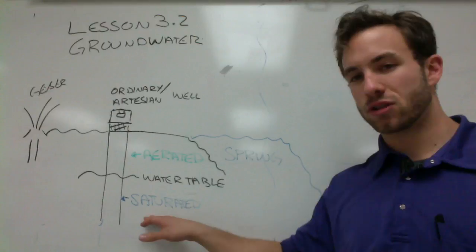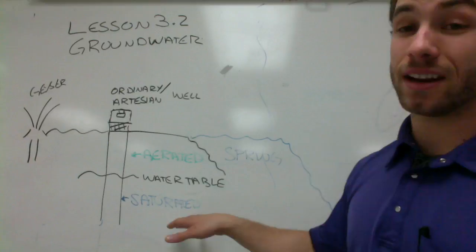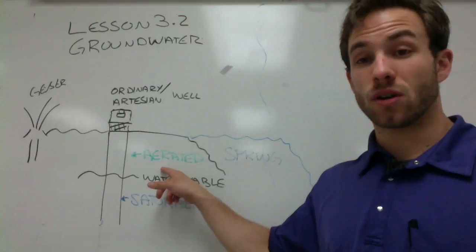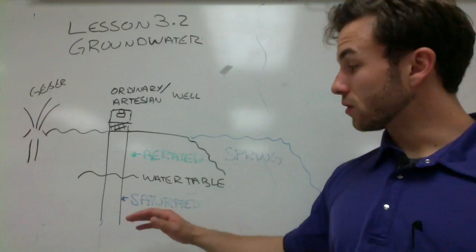The place where that water is stored is what we call the zone of saturation — saturated because there's water filling that space. That zone of saturation is divided by a water table, which is the line where we separate where there is water and where there's not. The area where water does not exist is called the zone of aeration, because it's filled with open space or air.